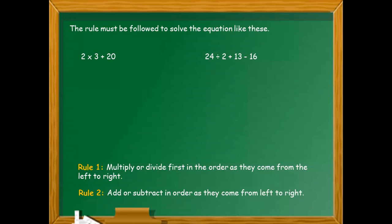Tandaan ang rule number 1: Multiply or divide. Rule number 2: Add or subtract. In both, this should be come from left to right.